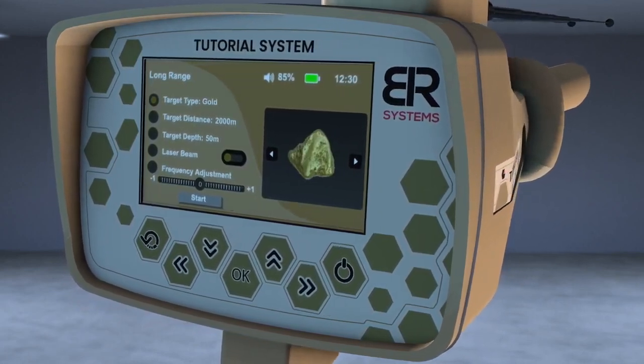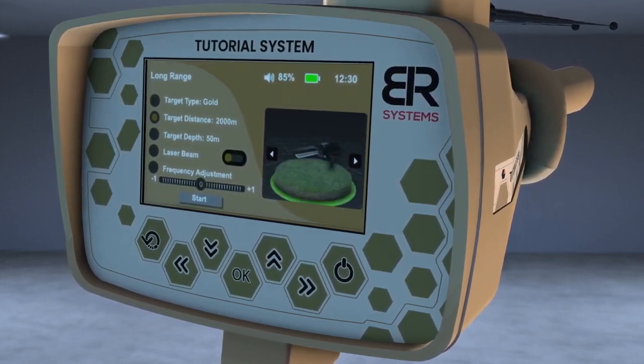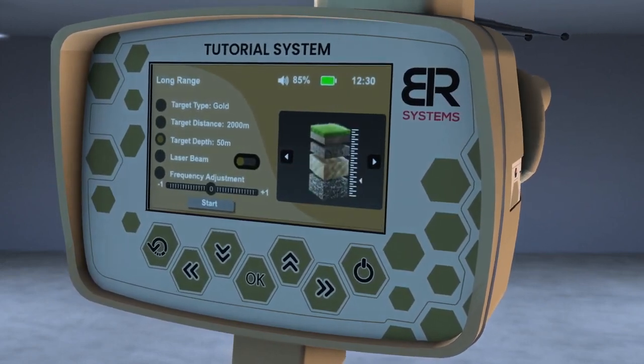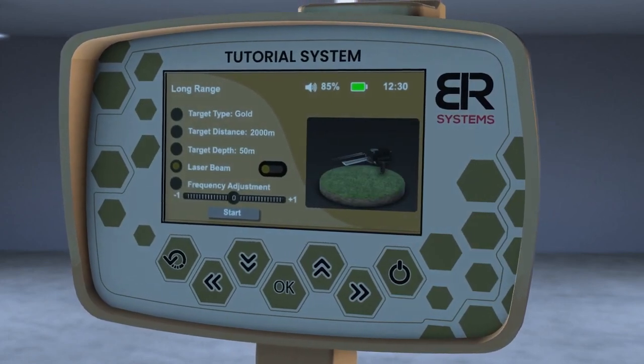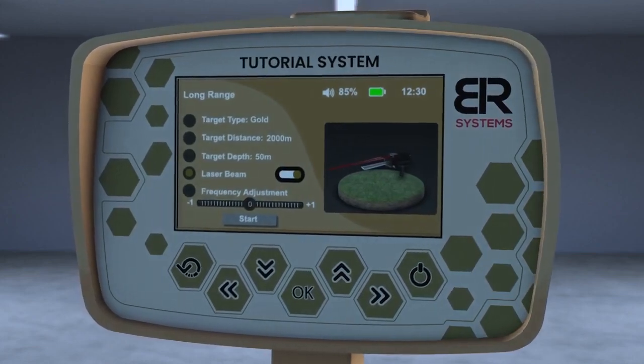For example, gold. Choose the front distance. Then choose the depth of the target. 50 meters as an example. Then turn on the laser pointer to better know the direction of the search pointer.